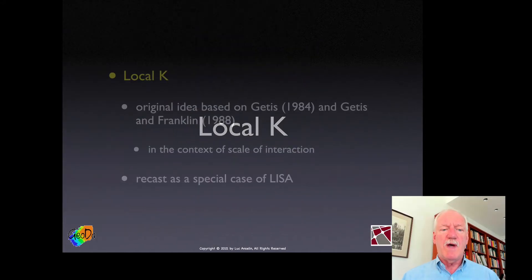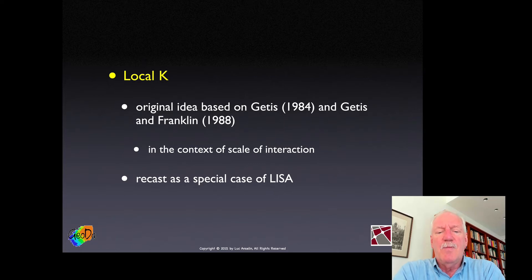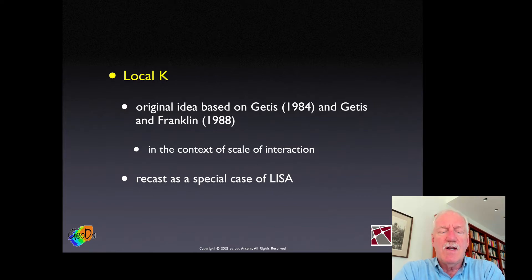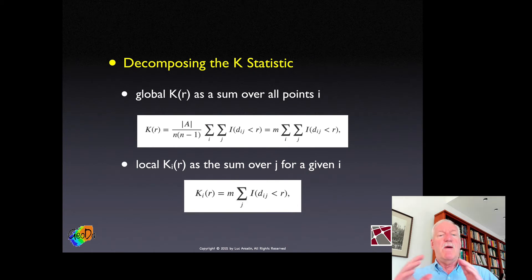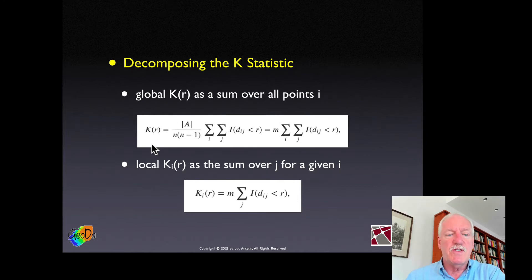So what's the local K? The idea of the local K came out of point pattern analysis originally, and it was formulated by Geddes and Franklin in the context of looking at the scale of interaction. I'm going to recast this local K function as a special case of LISA. Anytime you have a statistic that is a double sum over I and J, we're in business. As we saw in the previous lecture, the global K is the inverse intensity, then an average over all the points except the one we're considering.